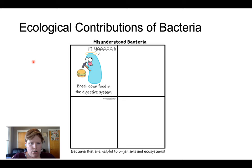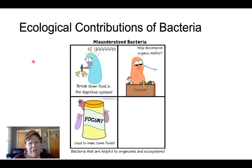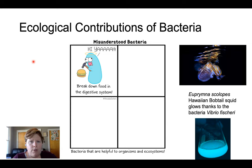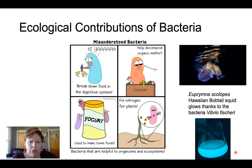Beyond those examples, lots of bacteria have really specialized relationships with other plants, animals, and fungi. If you've never seen the Hawaiian bobtail squid — these are super cute little squids that fit in the palm of your hand. They live in really shallow waters in Hawaii and have a remarkable ability to glow in the dark, because a special bacteria called Vibrio fischeri can bioluminesce. These bacteria live in specialized places in the squid so it can hide from predators and prey at night.